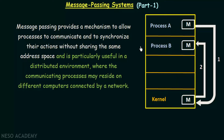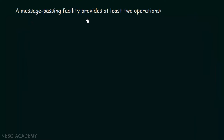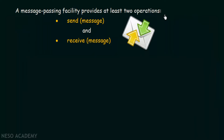That is how message passing systems work. We will go into the details and see what its features are and how it actually works. The message passing facility provides at least two operations: send message and receive message. Send message is the operation that allows a process to send a message to another process it wants to communicate with. Receive message is the operation that allows the recipient process to receive the message from the sending process.